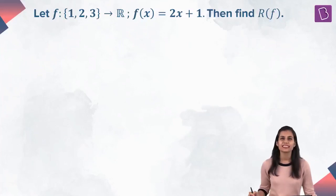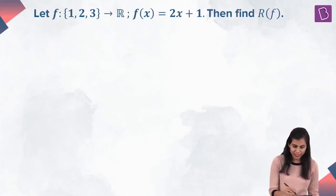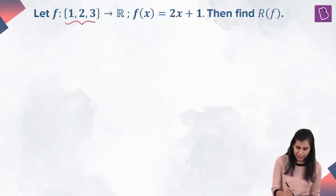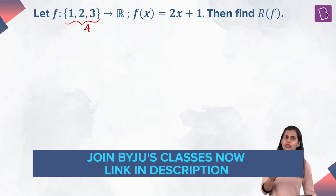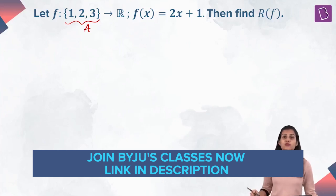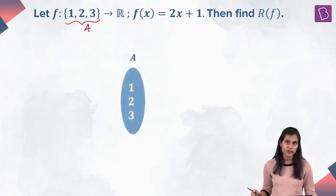Let's begin by finding the range of the function defined by the rule f(x) = 2x + 1, corresponding to the domain set A. Because A is a small finite set consisting of just three members, let's use the arrow diagram approach here. So my first set, set A, is the domain of this function drawn here.